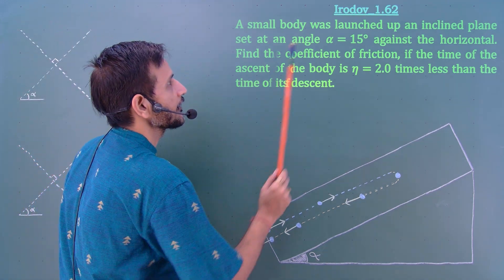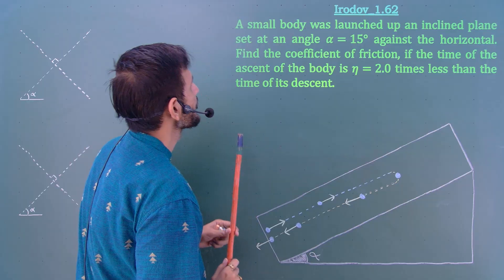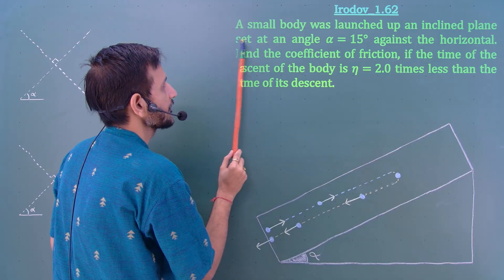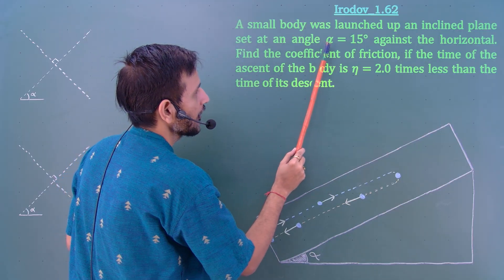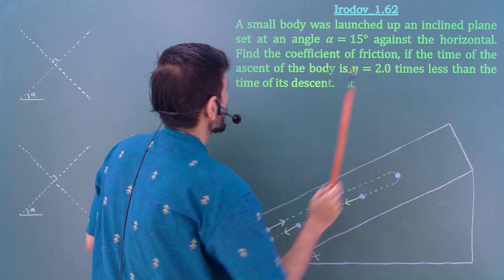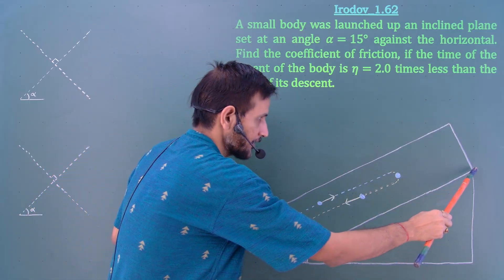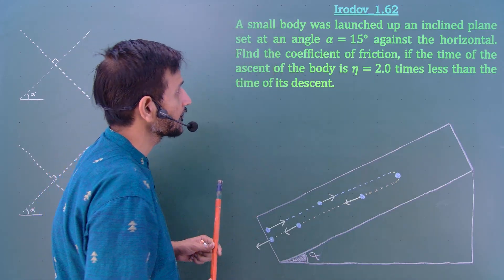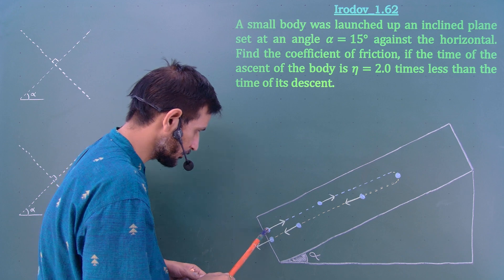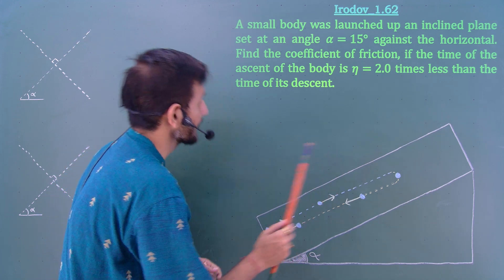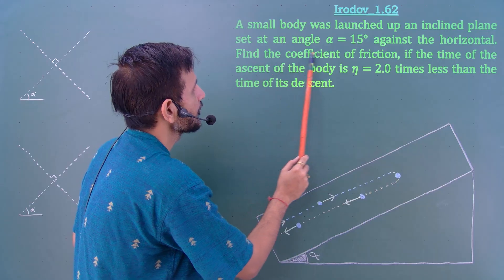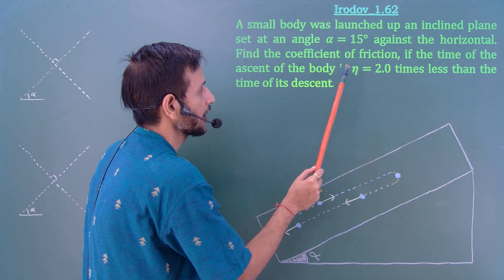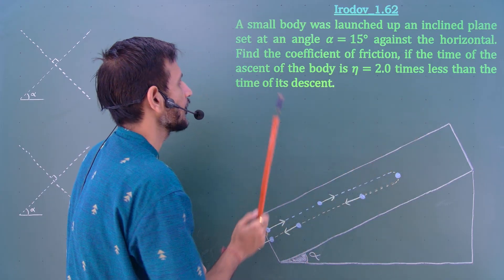Students, let us solve Irodov problem number 1.62. A small body was launched up an inclined plane set at an angle alpha of 15 degrees against the horizontal. Find the coefficient of friction if the time of ascent of the body is eta times less than the time of its descent.